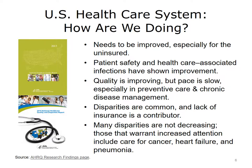The Agency for Healthcare Research and Quality's, AHRQ, mission is to produce evidence to make health care safer, higher quality, more accessible, equitable, and affordable, and to work within the U.S. Department of Health and Human Services and with other partners to make sure that the evidence is understood and used. For more than a decade, AHRQ has also produced the National Health Care Quality Report, NHQR, and the National Health Care Disparities Report, NHDR. The NHQR tracks the health care system through quality measures, such as the percentage of heart attack patients who received recommended care or the percentage of children who received recommended vaccinations. The NHDR summarizes health care quality and access among various racial, ethnic, and income groups and other priority populations, such as residents of rural areas and people with disabilities.